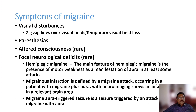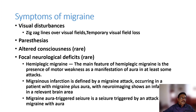Other symptoms include visual disturbances such as zigzag lines and temporary visual loss, and paresthesia on one part of the head or face. Altered consciousness is uncommon but some patients arrive to the ER with altered behavior or reduced sensorium. Migraine can be a close differential for stroke, post-ictal state, or encephalitis. Focal neurological deficits are rare but can occur in hemiplegic migraine.